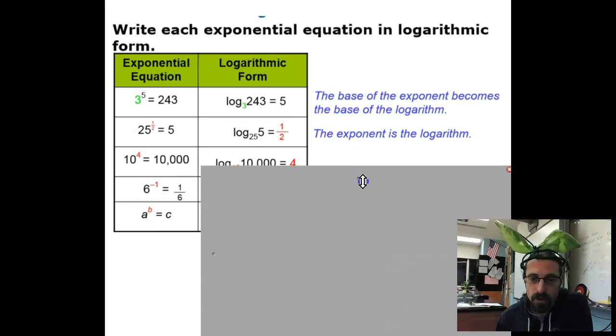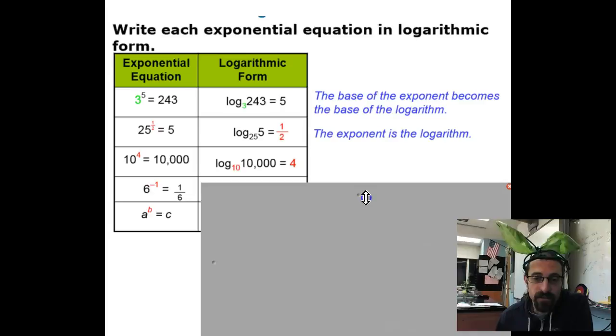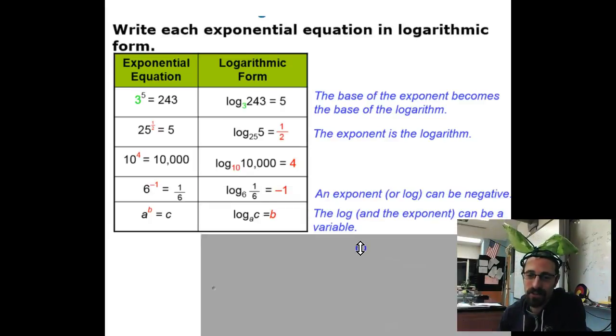Let's see what you came up with. 10 to the 4th is 10,000, so the log base 10 of 10,000 equals 4. 6 to the negative 1st is 1 sixth. Well, log base 6 of 1 sixth equals negative 1. Come on in. And here's your other answers. Take a look at these. Anything, log of a to the c equals base b.